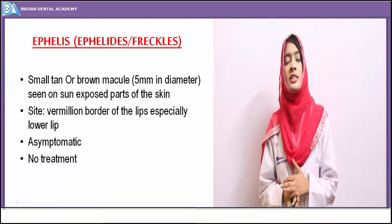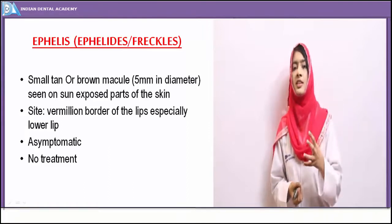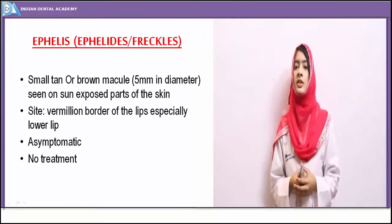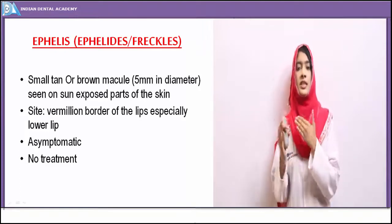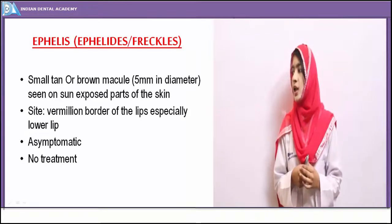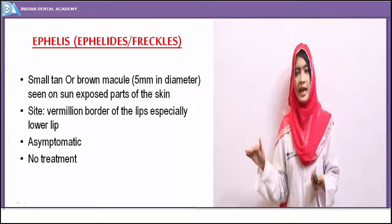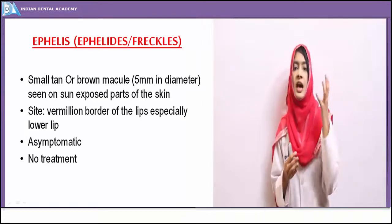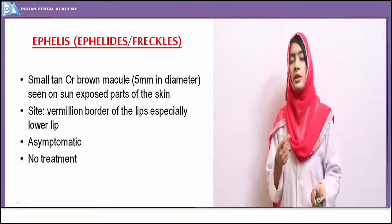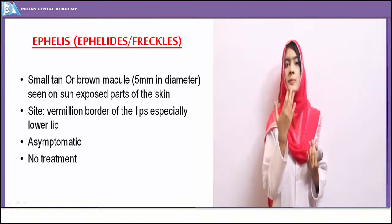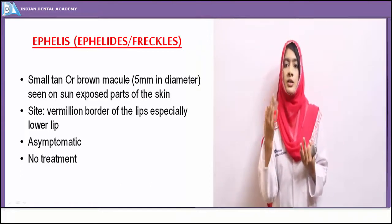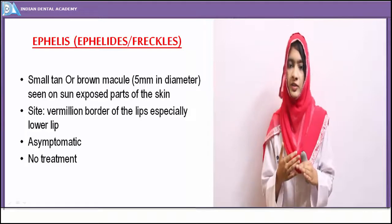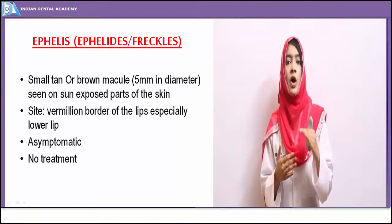Ephelis or freckle is also a form of endogenous pigmentation. Due to prolonged sun exposure, a few of the epidermal melanocytes show excessive overgrowth and get deposited on the skin or oral mucosa, showing the characteristic appearance of ephelis or freckles. Small tan or brown macules less than 5 mm in diameter are seen. The etiological factor is ultraviolet ray exposure. Macules are seen on the vermilion border of lips, especially the lower lip, which is more prone to sun exposure. Males are more commonly affected due to outdoor work.